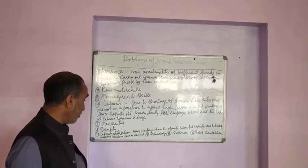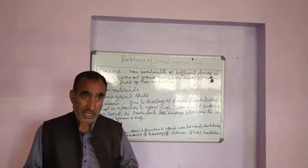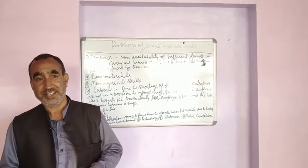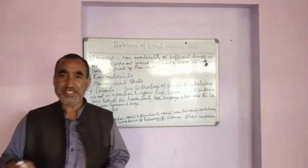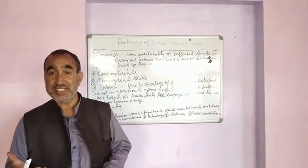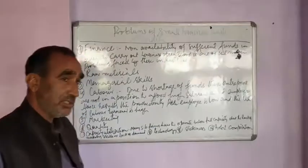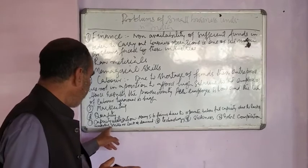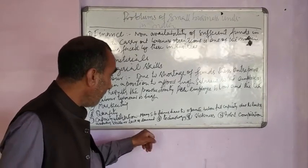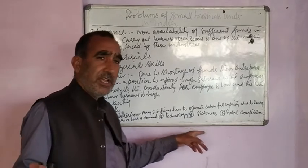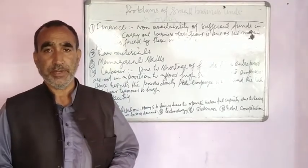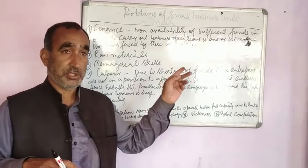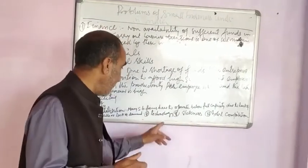Capacity Utilization: If our unit has capacity to produce but there is no demand in the market, or we don't have the resources to utilize this capacity, it becomes a problem. Lack of demand is a related issue. Technology is also a barrier — if we don't have the capacity due to lack of funding, we are unable to adopt modern technology.